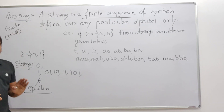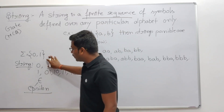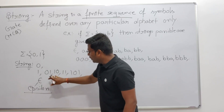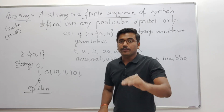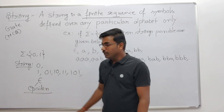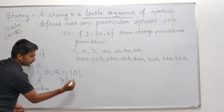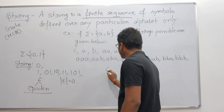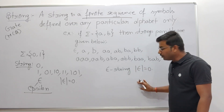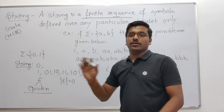Epsilon is a string — it is a finite sequence of symbols — but its length is 0. Students generally get confused here: epsilon is a string, but whose length is 0. This combination says it is not having neither 0 nor 1. So if sigma = {A, B}, possible strings include: epsilon (neither A nor B), then length-one strings A and B, and length-two strings AA, AB, BA, BB.